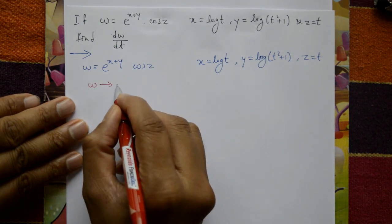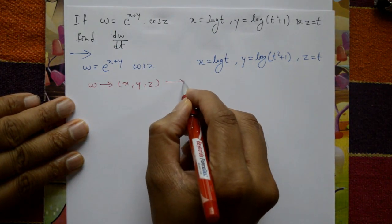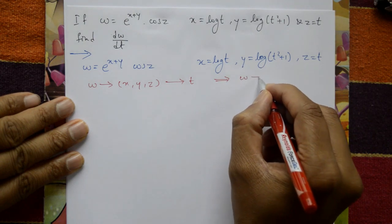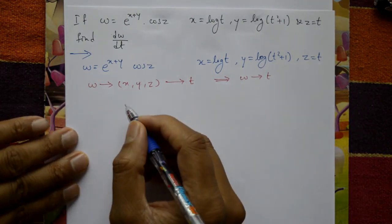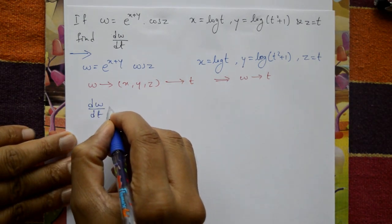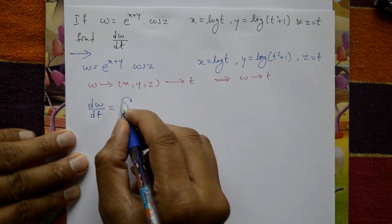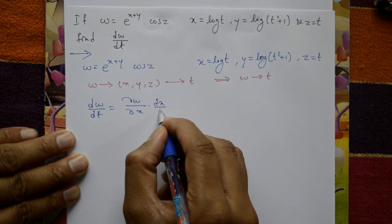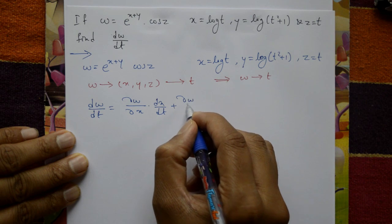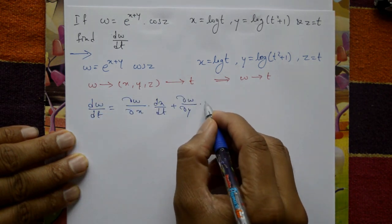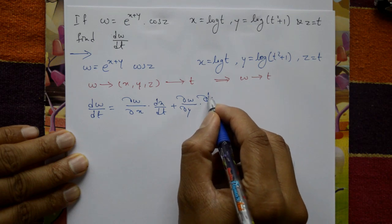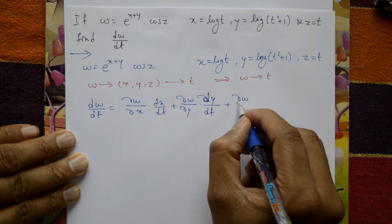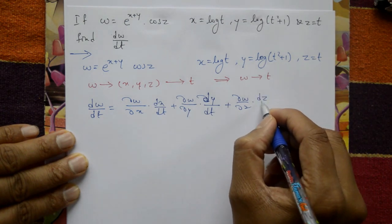W is a function of X, Y, Z, and X, Y, Z are all functions of single variable T. So W is ultimately a function of T. Using the total derivative formula: dW by dT equals dou W by dou X into dX by dT plus dou W by dou Y into dY by dT plus dou W by dou Z into dZ by dT.